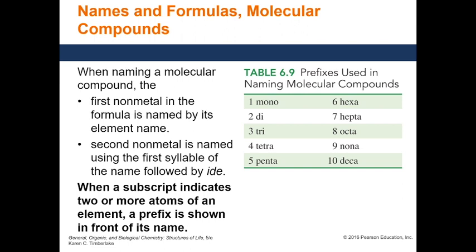When naming a molecular compound, the first non-metal in the formula is named by its element name — whatever the name of the first non-metal is, we just use that name. The second non-metal is named by using the first syllable of its name followed by '-ide'.